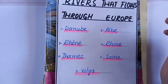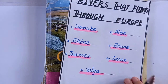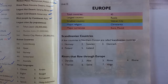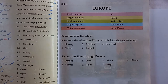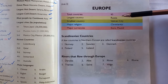How many rivers flow through continent Europe? Seven. How many Scandinavian countries are there? Five. Open your book to page number 11. There is the topic continent Europe — it's Unit 2.